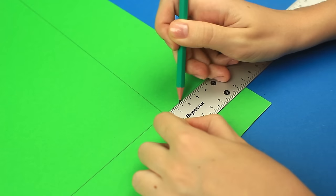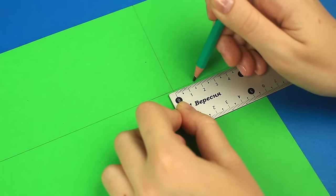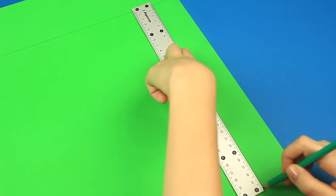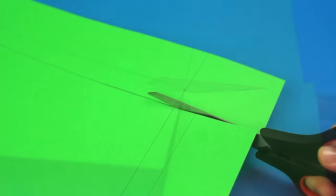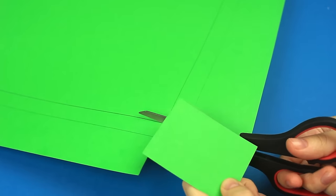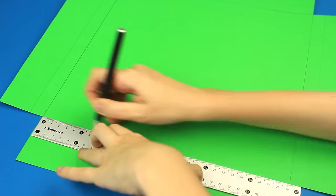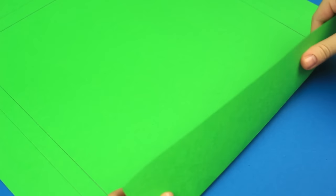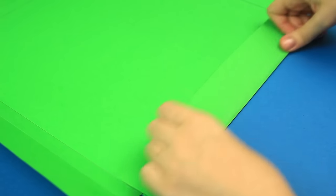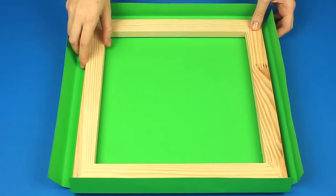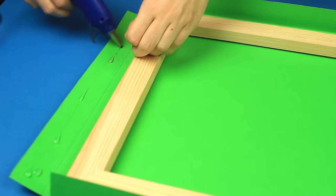Draw another line as a frame width beyond the initial traced one. Cut off the corners. Score the lines, fold up, place the frame inside, and hot glue the paper.